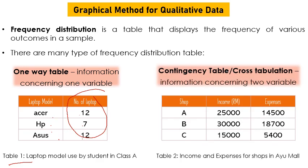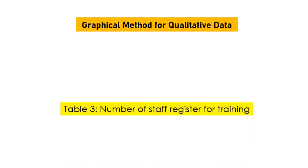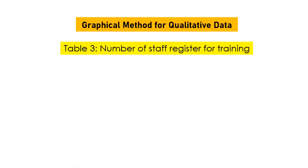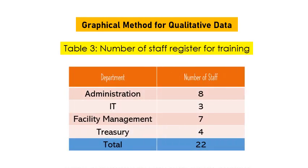Second, a contingency table, or cross-tabulation, contains information concerning two variables — for example X and Y, or income and expenses. Another example shows temperature and number of stars registered for training.